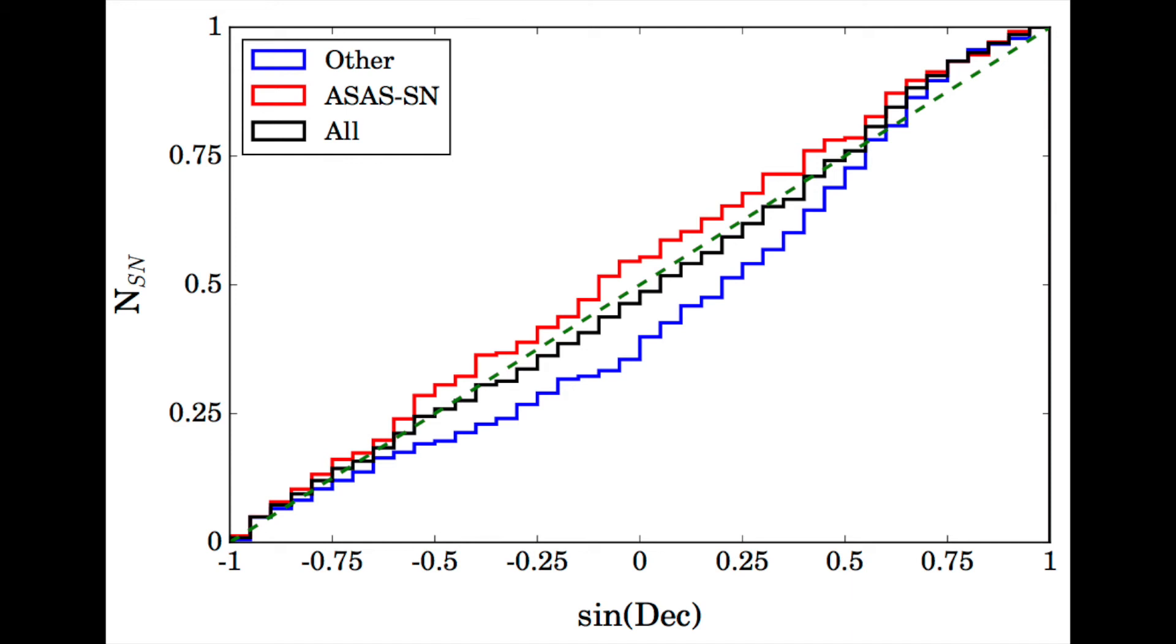Supernovae discovered by other sources, the blue line, are biased towards the northern hemisphere, while the red ASASSIN sample corrects this trend. This causes the combined sample, shown in black, to track the expectation closely.